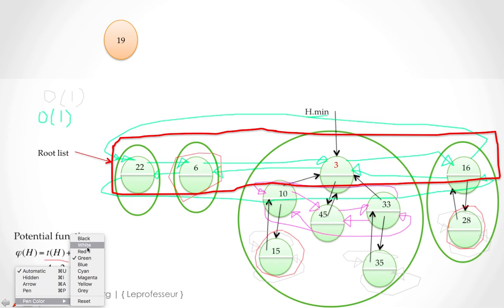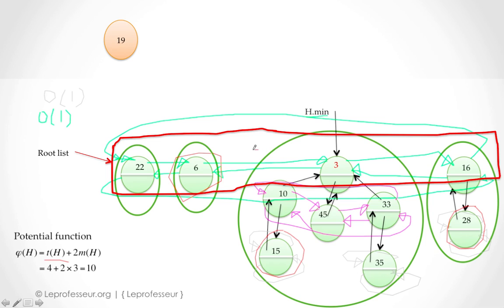We simply insert 19 into the root list. The pointer coming from 3 now points to 19, and 19 points to 6. The pointer that was earlier going from 6 back to 3 now goes from 6 to 19 and from 19 to 3. So we have successfully inserted node 19 into the root list.